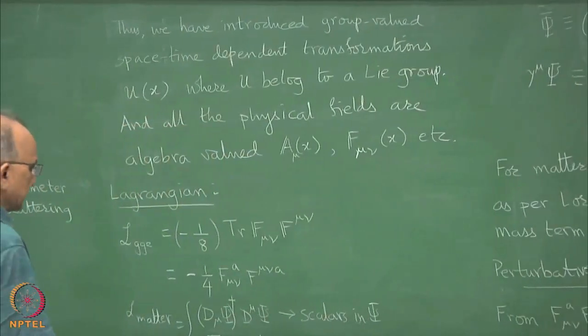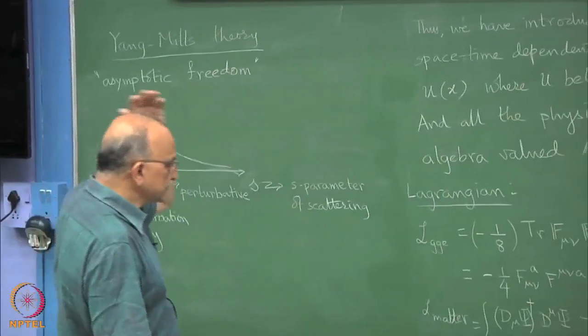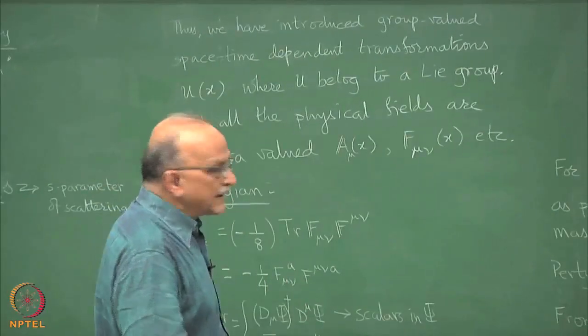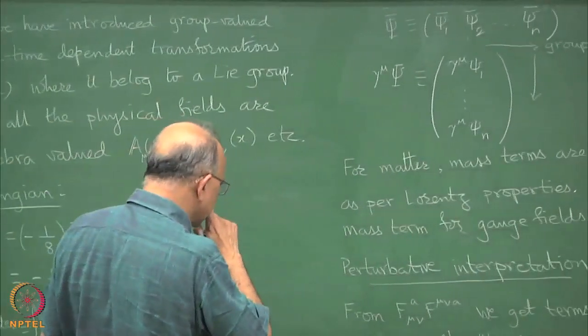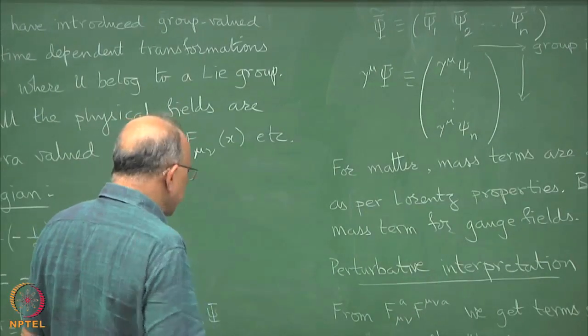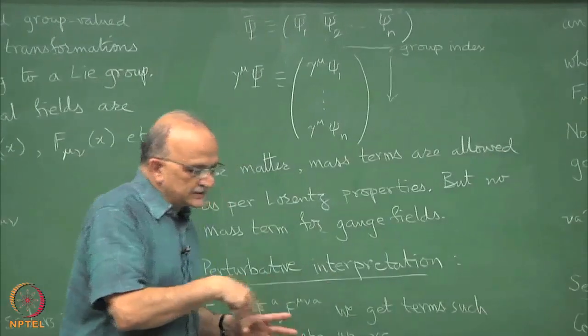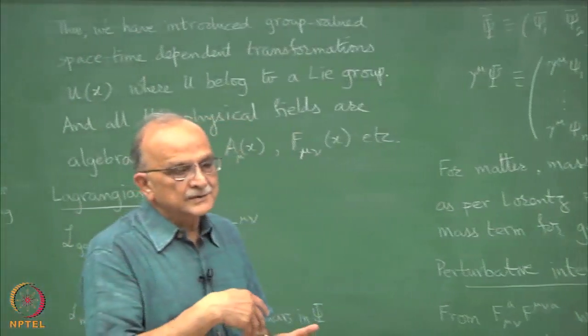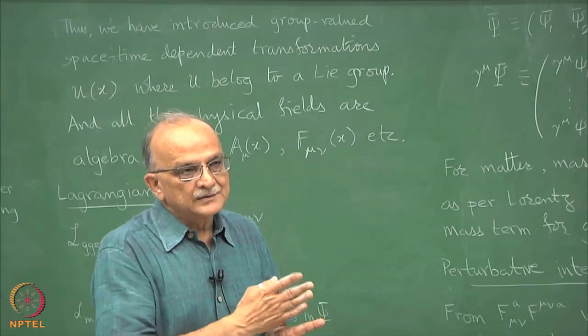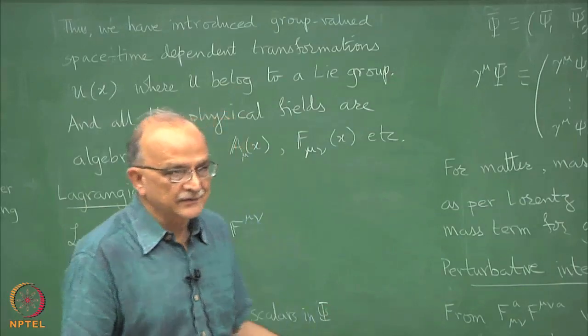Some light on this was thrown by t'Hooft's clever observation that if you use large n, so you take SU(n) group, the n of SU(n) you make it large. Then it turns out that n enters somewhere here. The coupling itself becomes, in the diagrams all any loop has a 1 over n in front of it. Therefore, in the limit of large n, all the loops become subdominant and only tree diagrams survive.